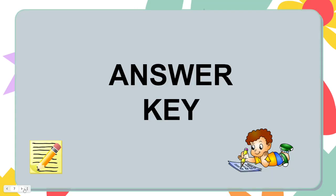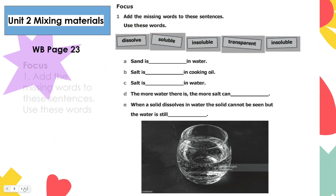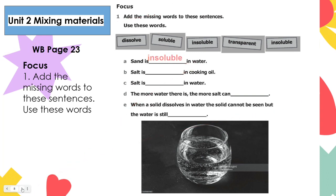Now let's answer number one: add the missing words to these sentences using the words dissolve, soluble, insoluble, and transparent. Letter A: sand is insoluble in water, because the bond of water is not strong enough to dissolve the sand.